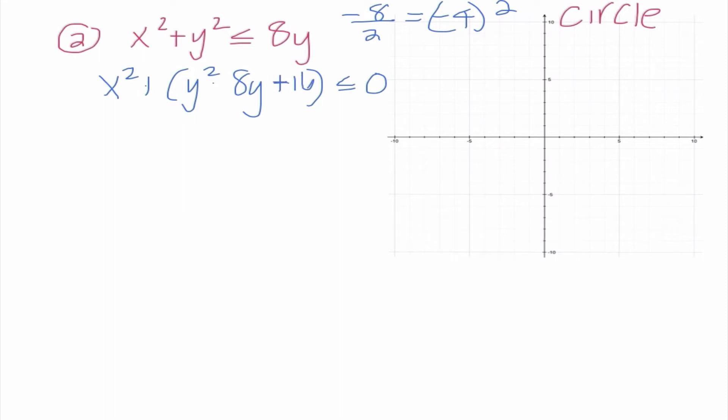So if I add 16 to one side, I know I have to add 16 to the other side as well. So I have x² + (y - 4)² ≤ 16. So my characteristics, I know that my center is going to be (0,4) because we don't have anything in the parentheses with x, and the opposite of negative 4 is 4. My radius, once again, is 4 because the square root of 16 is 4.